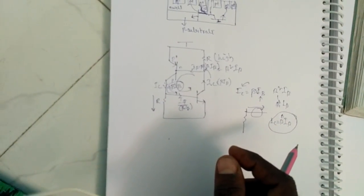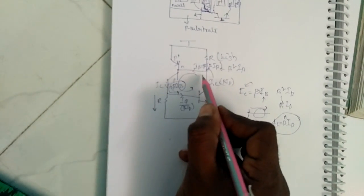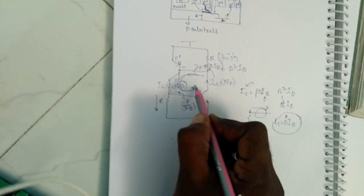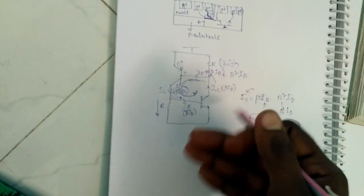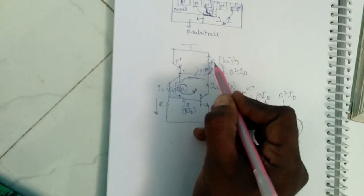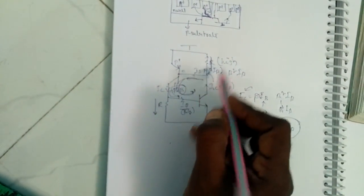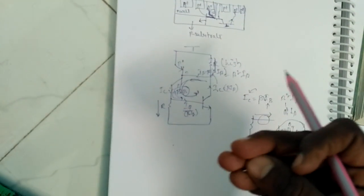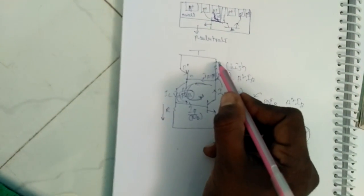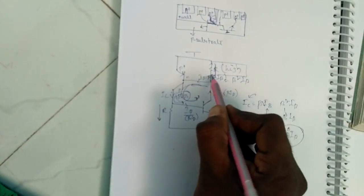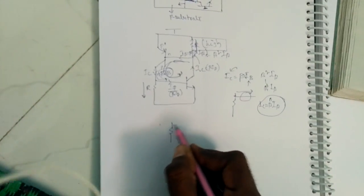So what we have to do for this latch-up? The current is going like this. Due to this, latch-up will come. So divert the current, which means make it flow through it also. What we have to do is short circuit it.